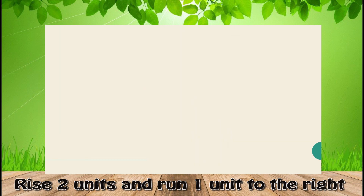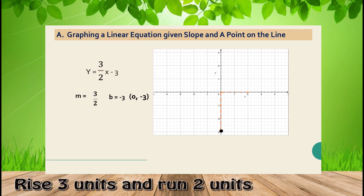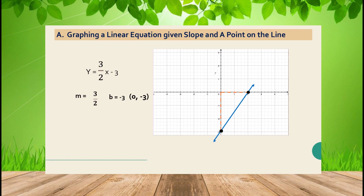Last example: y = (3/2)x - 3. The slope is 3/2 and the y-intercept is -3. Use the y-intercept as the starting point: plot (0, -3). From that point, rise 3 units upward and 2 units to the right to find the second point, then connect the two points. That is the line of y = (3/2)x - 3. That's all for now, thank you for watching.